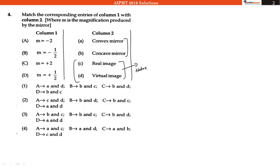So here we are given the nature and here in A and B we are given what kind of mirror we are using. So as you can see in column 1 magnification is given.